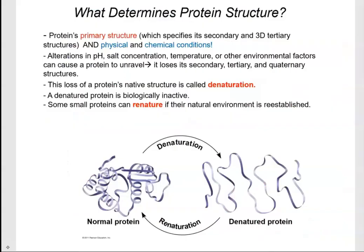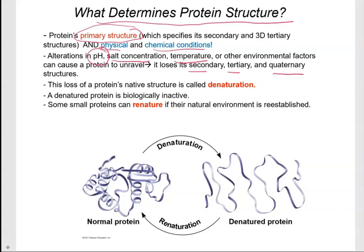What determines protein structure is the primary structure, which is dictated by your DNA. However, how the protein folds is also affected by physical and chemical conditions. If we change the pH of the environment, salt concentration, temperature, or any other environmental factors, we can disrupt the bonds that maintain the secondary and tertiary structures, causing the protein to unravel and lose its actual shape — resulting in loss of secondary, tertiary, and quaternary structures.